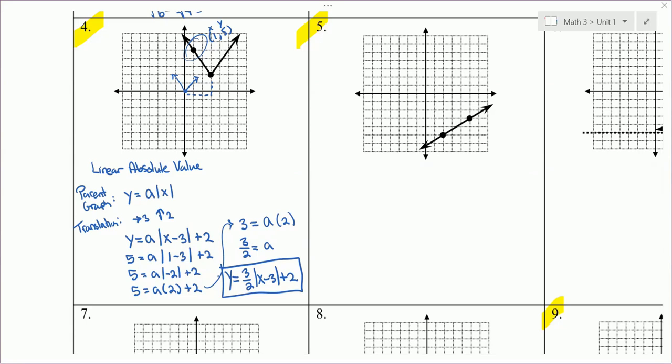Number 5. Notice it's a line or linear. The parent graph is y equals m times x. You could put m times x or a times x. I'll do m times x. If you remember, m is your slope. Look at the translation. So the parent graph goes through 0, 0.